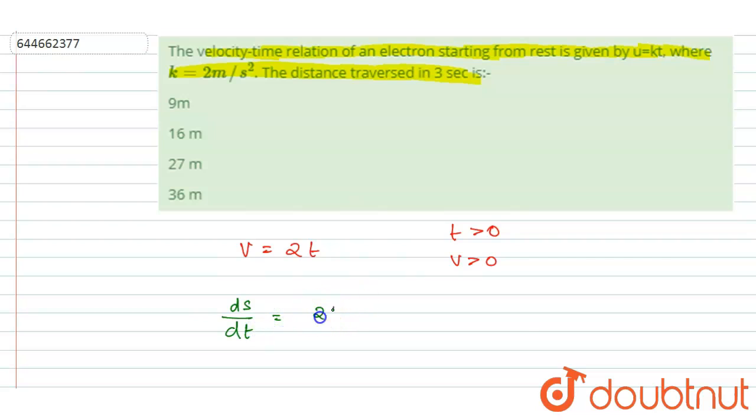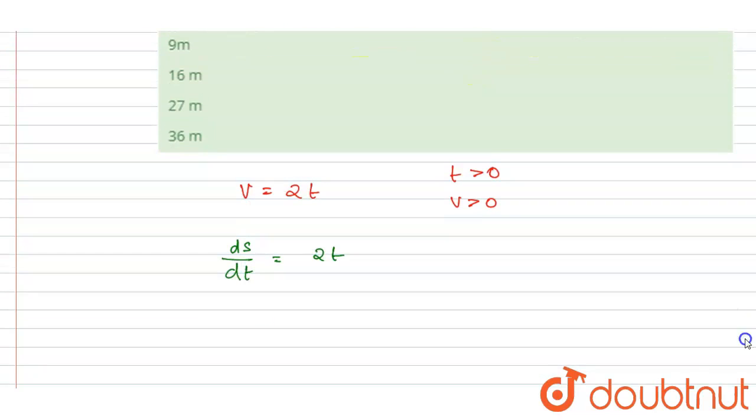Here the distance and displacement will be the same. So I will write ds/dt equals 2t. And velocity is not changing its direction.